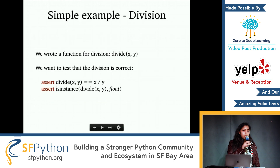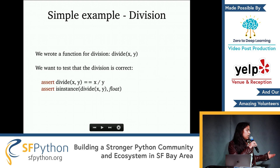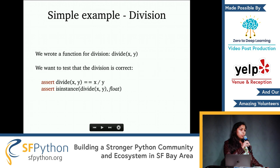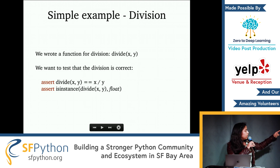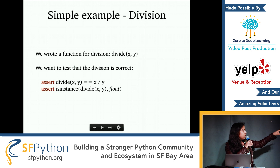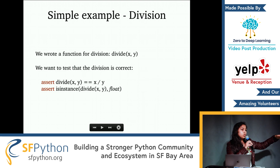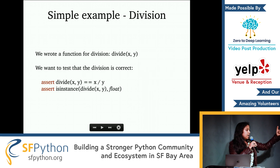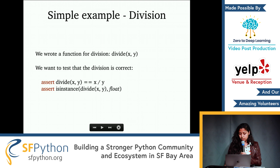Suppose a really simple example — suppose we write a division function where X is divided by Y. We might want to test a couple of things like, does it actually do what it's supposed to do? We can do that with 'assert'. Basically 'assert divide(X, Y)' — the output from that is equal to X over Y — to ensure the function output is actually equal to what it's supposed to output.